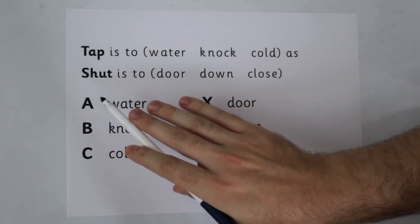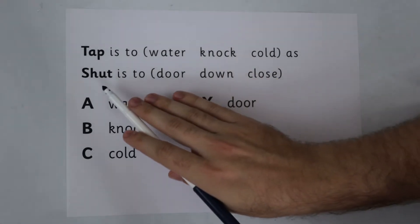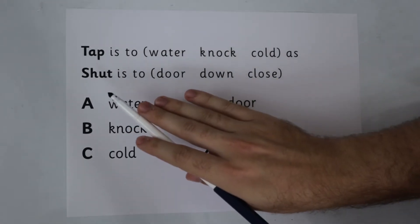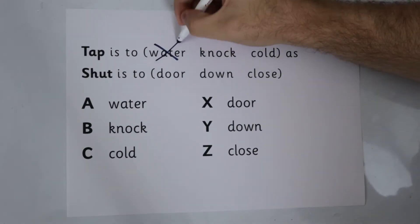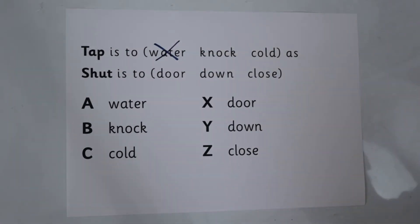Door comes out of a shut, I don't think so. Down comes out of a shut and close comes out of a shut. That does not work, it cannot be water. There is no link between the two parts of the sentence.